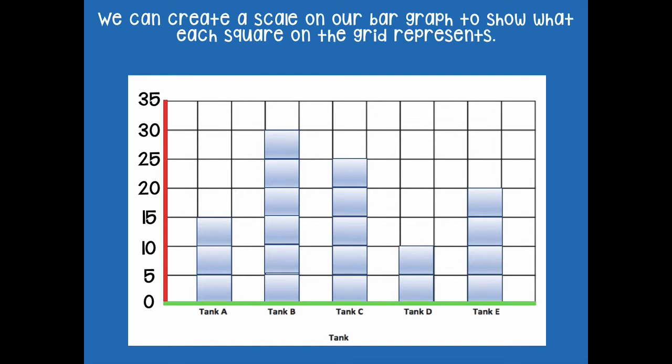Why do you think I counted by fives? Because each one of these squares is five. If I fill in one square, I have five. If I fill in two squares, I have 10, then 15 if I keep going. Pause the video and go ahead and label up the side of your grid now, just like I did.